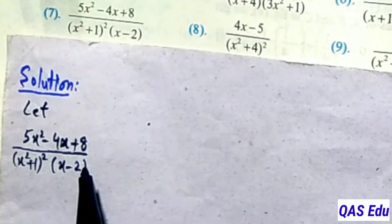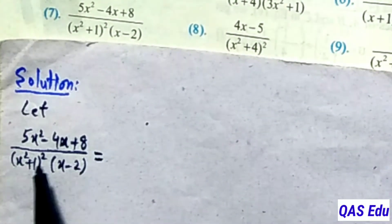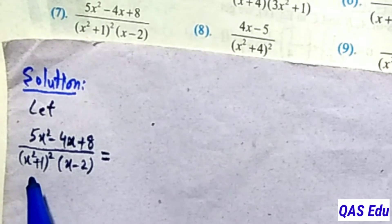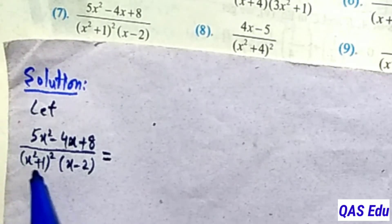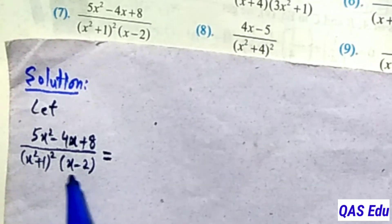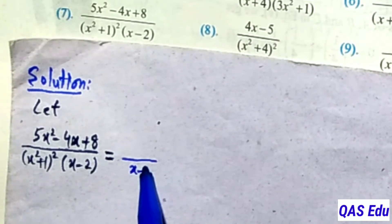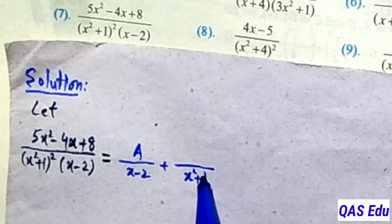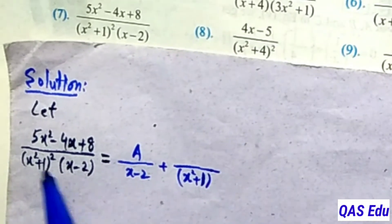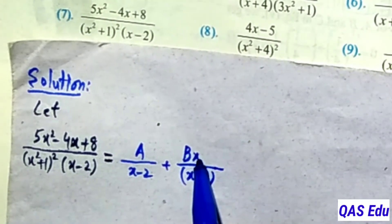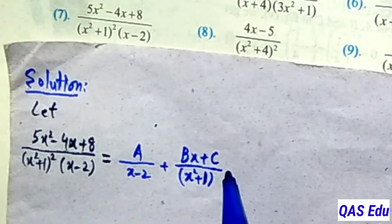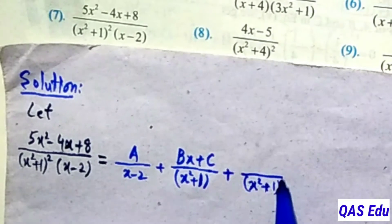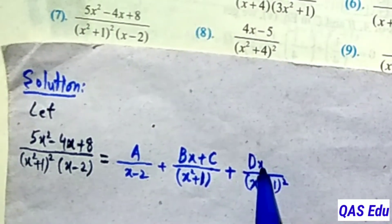If we start the solution, we will start with the fractions. We will see that the linear factor is x minus 2, and the quadratic factor x squared plus 1 is repeated. The quadratic repeated factor is x squared plus 1, whole squared.